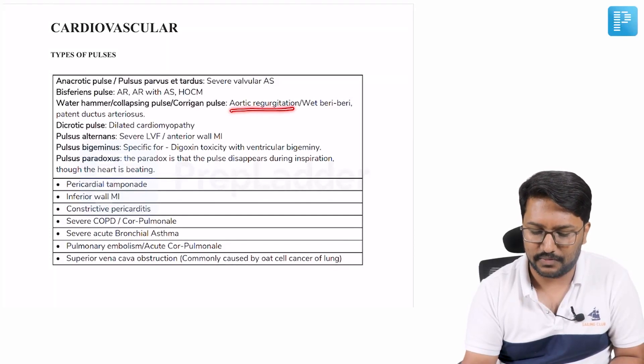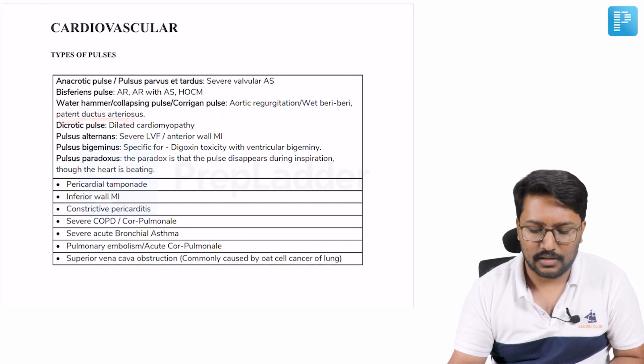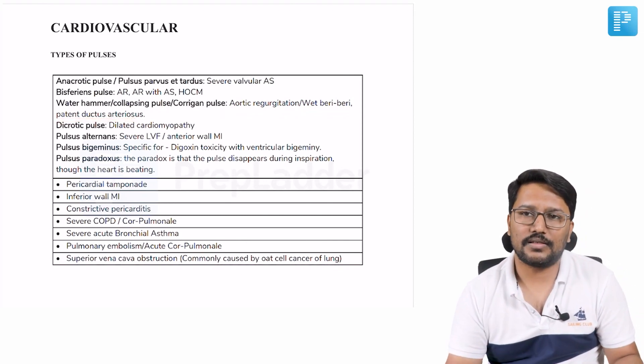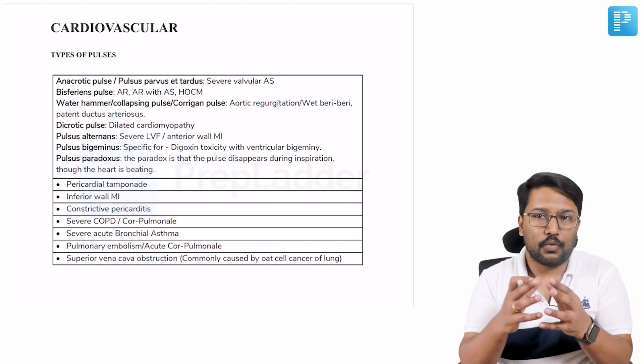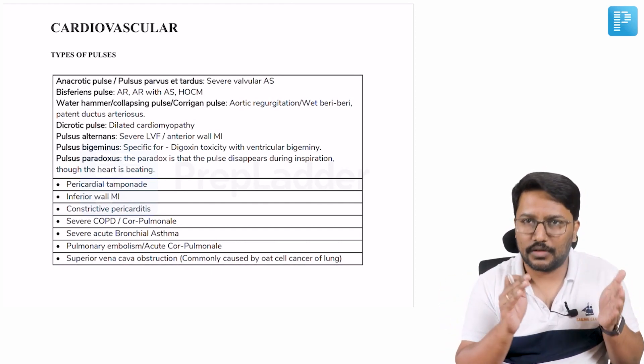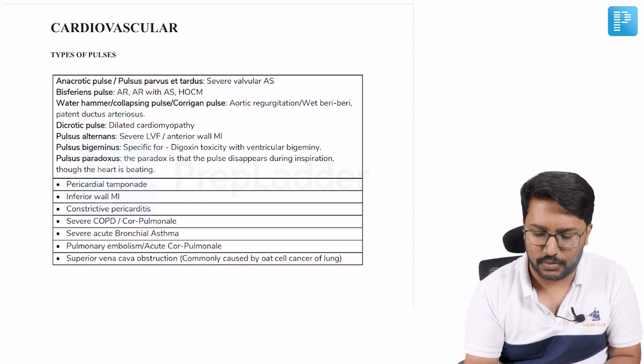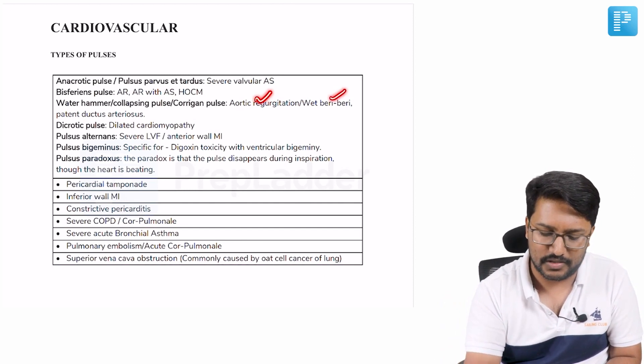We see aortic regurgitation presenting with Corrigan's pulse, wet beriberi, or patent ductus arteriosus. The essence is whenever you have a wide pulse pressure, you can have a collapsing or water hammer type of pulse. In all these cases, you generally see wide pulse pressure.